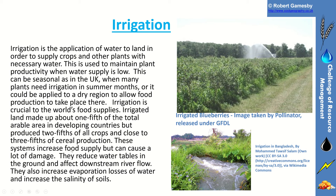These irrigation systems increase food supply, but they can cause some damage: they reduce water tables and river levels, increase evaporation losses of water, and also add mineral salts to the soil.